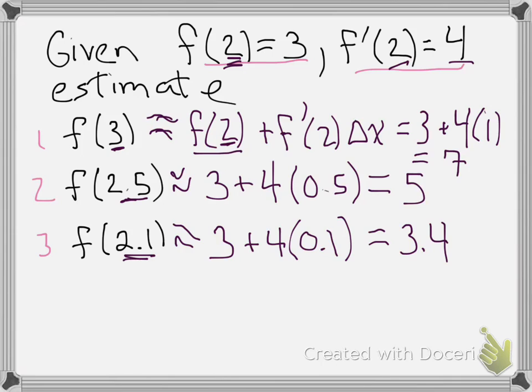Hopefully you're able to see the pattern. The key is figuring out how far you're moving in the x direction. So you're taking your output value plus your rate of change times your slope. We're basically doing a tangent line approximation without actually finding the tangent line.